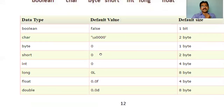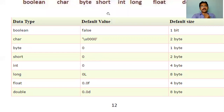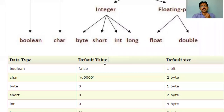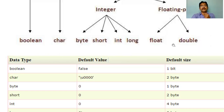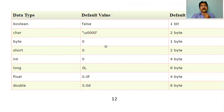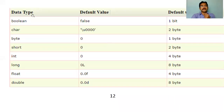Let me now see the sizes of each and every data type. These are the eight different data types we are going to be using in Java mainly: boolean, char, byte, short, int, long, float, and double. We also have string and array, but these eight are the primitive data types. In this table, it clearly mentions the default data values and the sizes. The first column talks about the data type, the second column talks about the default value, and the third column talks about the default size.